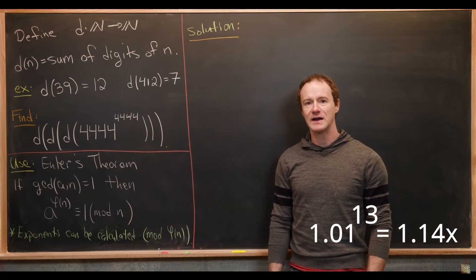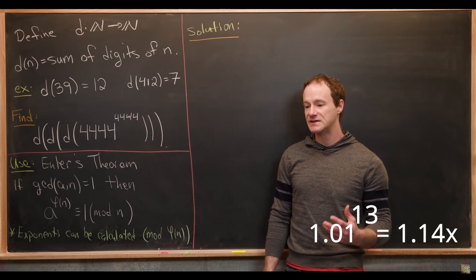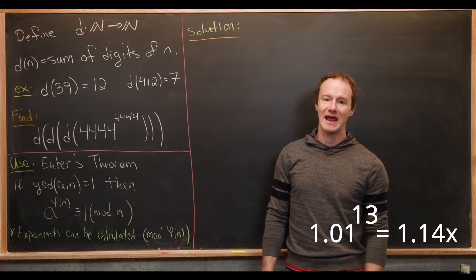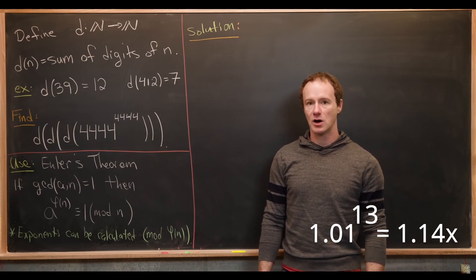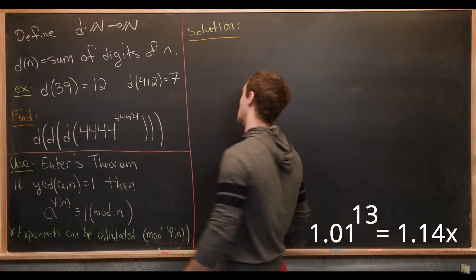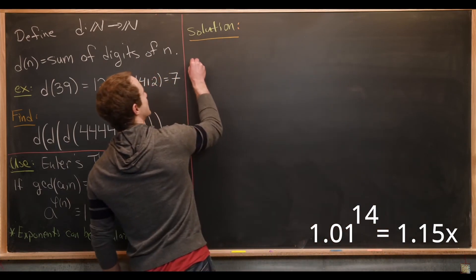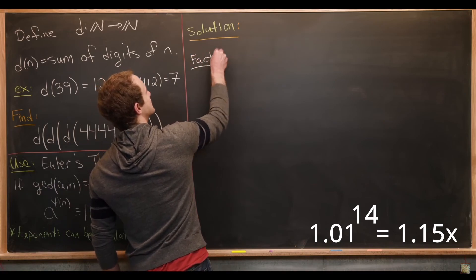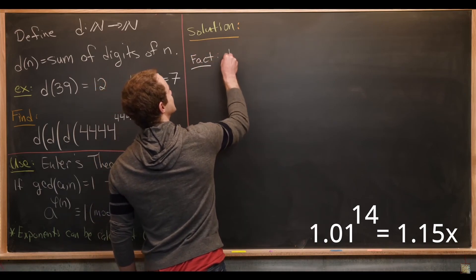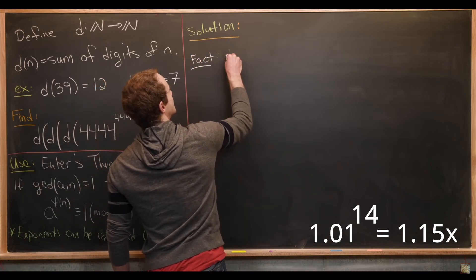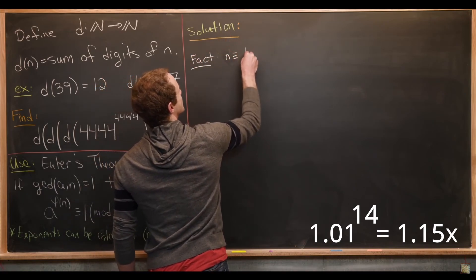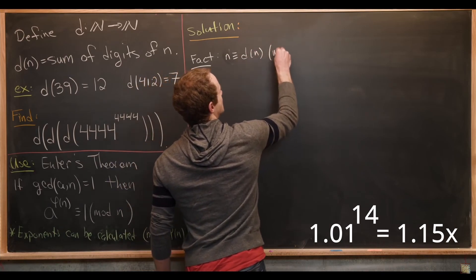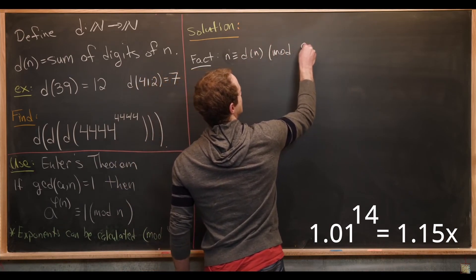Why mod 9? That's because the digit sum of a number and the number are congruent mod 9. Let's write that as a fact: n is congruent to the digit sum of n modulo 9.